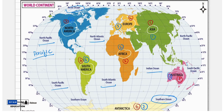So the largest is the Pacific and the smallest is the Arctic Ocean. There are five oceans in total: Pacific, Atlantic, Indian, Southern (or Antarctic) Ocean, and Arctic Ocean.